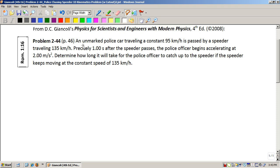It involves an unmarked police car traveling at a rate of 95 kilometers per hour that is then passed by a speeder going at a faster rate of 135 kilometers per hour.